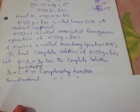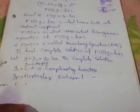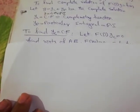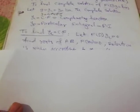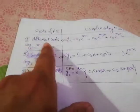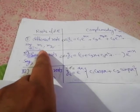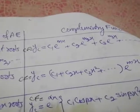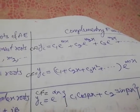The complementary function solution can be obtained by solving f(D) on yc equal to zero, which means finding the roots of the auxiliary equation f(m) = 0. If the roots of the auxiliary equation are different, say m₁ and m₂, then the complementary function is c₁e^(m₁x) plus c₂e^(m₂x) plus so on, depending on the number of roots.